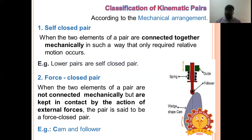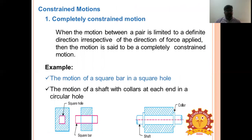In an unclosed or open pair, two links or elements are not held together mechanically. Examples include a flat belt running on a pulley, and cam and follower.